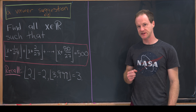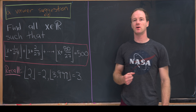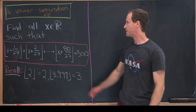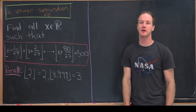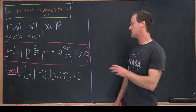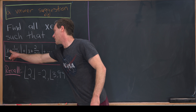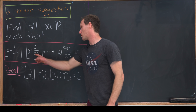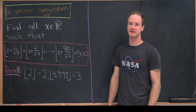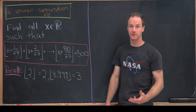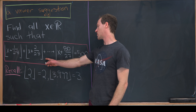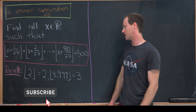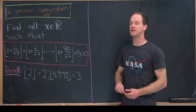Here I've got a nice viewer-suggested problem that involves the floor function. We want to find all real numbers x such that the floor of x plus 1 over 27, plus the floor of x plus 2 over 27, plus the floor of x plus 3 over 27, all the way up to the floor of x plus 80 over 27, is equal to 500.